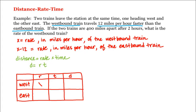X is the rate of the westbound train, and X minus 12 is the rate of the eastbound train. We know how far apart the trains are after two hours, so we let t equal 2. After two hours, the distance the westbound train has traveled is r times t, or 2x, and the distance the eastbound train has traveled is 2 times (x minus 12).